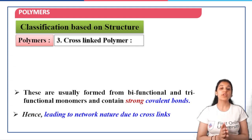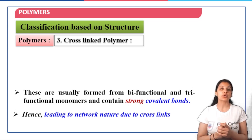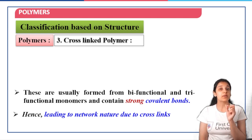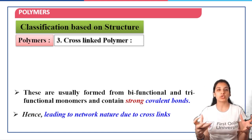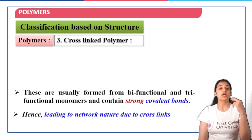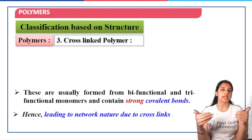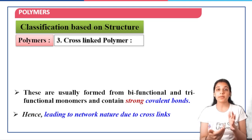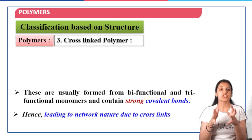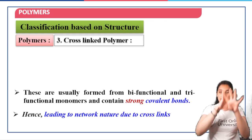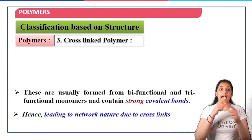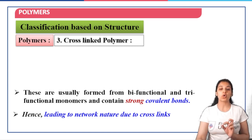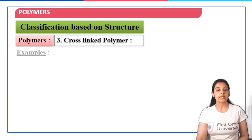Cross-linked polymers are usually formed from bifunctional and trifunctional monomers. The functionality of a monomer refers to the number of functional groups present in a monomer that can get involved in connecting to another monomer to form a polymer. If there are two such groups, linking takes place on both sides. If you have a trifunctional monomer — that is, three ways in which a monomer can link to another — linking occurs in all three directions, forming a three-dimensional network structure with strong covalent bonds. This leads to the network nature because of the cross-linking formed.